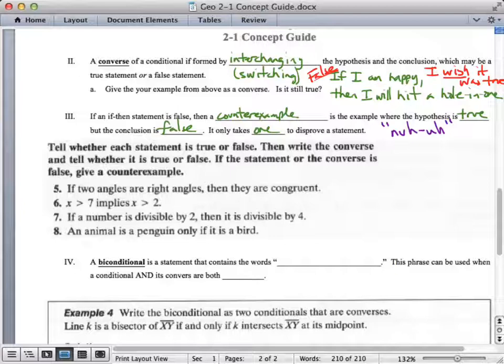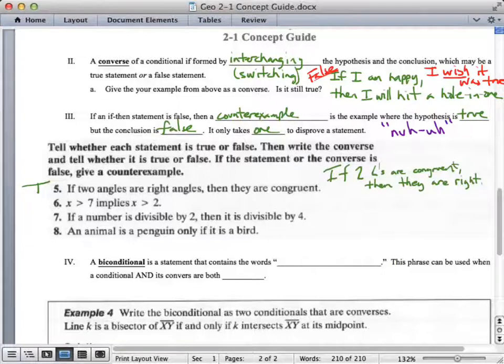So, here in these examples, you will tell if each statement is true or false. Then write the converse and tell whether it is true or false. If the statement or the converse is false, give a counterexample. Alright, so let's look at number five together. If two angles are right angles, then they are congruent. Well, that's true. If two angles are right angles, they're both equal to 90 degrees, and so, therefore, they're congruent. That's true. What's the converse of this? If two angles are congruent, then they are right angles. Is that true? Can you think of an example? Well, nuh-uh. If two angles are both equal to 50 degrees, they're congruent, but they're not right angles. That is called a counterexample. They can be less than 90 or greater than 90 and be congruent.